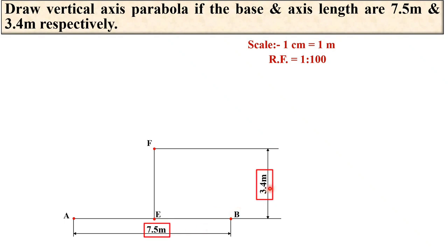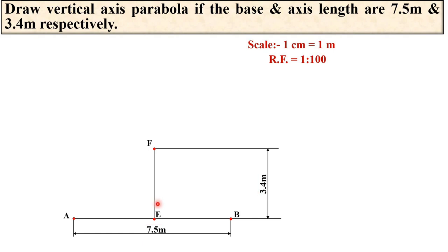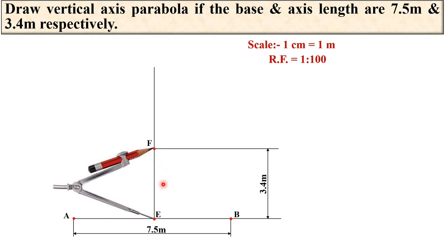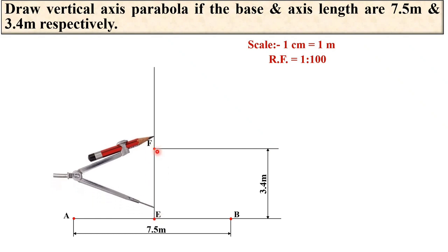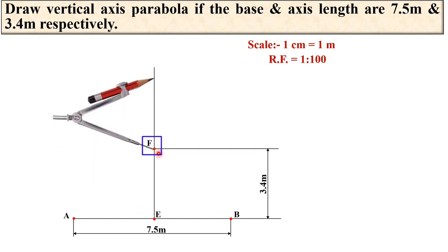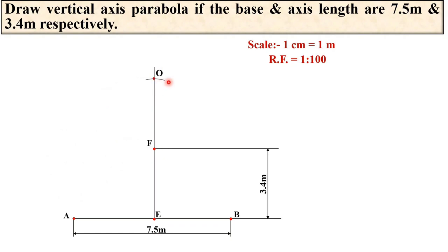Follow any one dimensioning method consistently in your drawing. Now extend the line EF upward — initially take the length randomly. Take the compass, set the radius exactly equal to EF, then take E as the center and draw an arc to get the intersection point. Mark it as point O, keeping in mind that OF is exactly equal to EF, which is 3.4 centimeters.